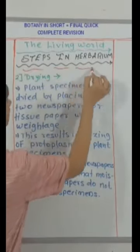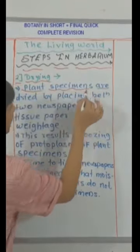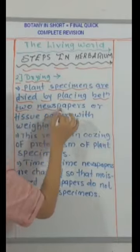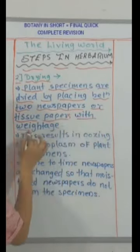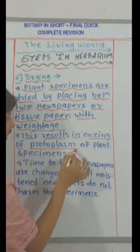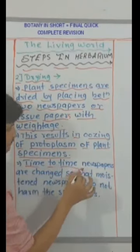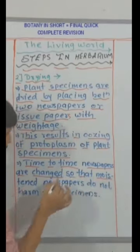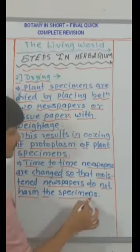Number 2: Drying. Plant specimens are dried by placing them between two newspapers or tissue papers with a weightage. This results in oozing of protoplasm from the plant specimens. Time to time the newspapers are changed so that moistened newspapers do not harm the specimens.